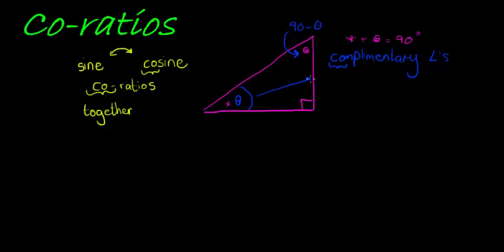So look what happens. If this is my opposite side, let's call it y, and that is my hypotenuse, call it r, and this is my adjacent, let's call it x. Then we see that sin of theta is equal to y over r.